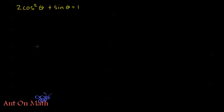First problem: 2 cosine squared theta plus sine theta is equal to 1. I have a cosine squared and a sine. I need to get this into a form where I can factor it so that I have a product on the left-hand side and zero on the right-hand side. This is kind of like a quadratic — I have a cosine squared and a sine theta.